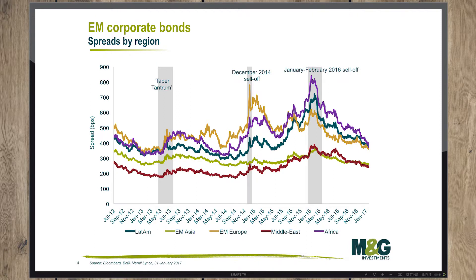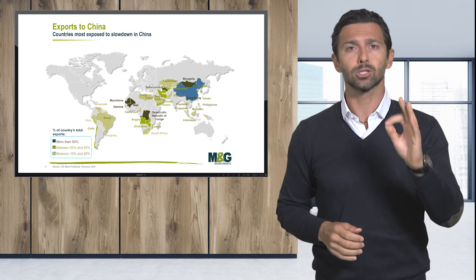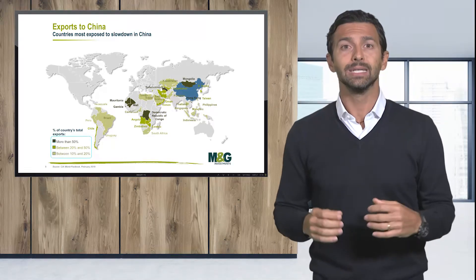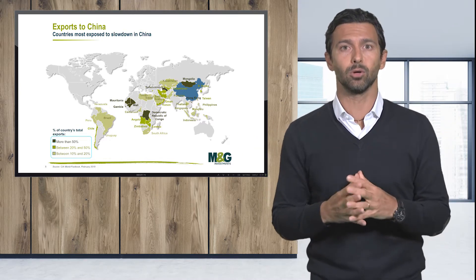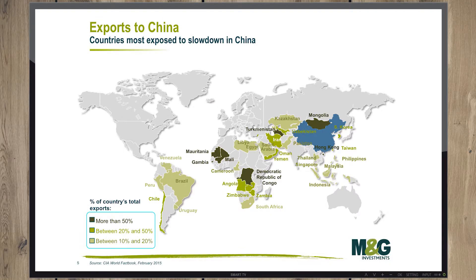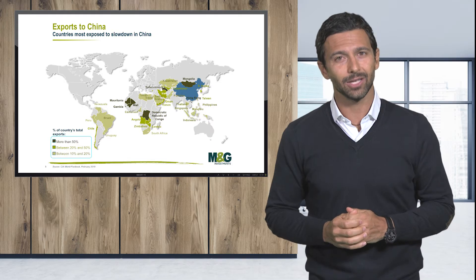In Eastern Europe, for example, there is a great dependency on what Western European countries and the ECB will do. One last thought: there are differences but also links among the regions. As we can see in this last slide, the trade of commodities is linking exporters from Latin America and Asia with importers in Asia.